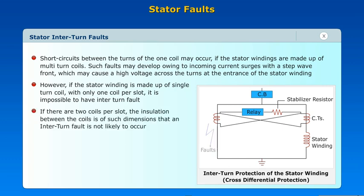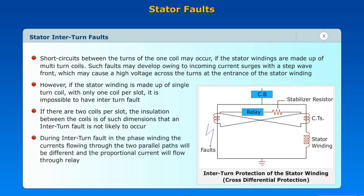If there are two coils per slot, the insulation between the coils is of such dimensions that an inter-turn fault is not likely to occur. During an inter-turn fault in the phase winding, the currents flowing through the two parallel paths will be different and the proportional current will flow through the relay.